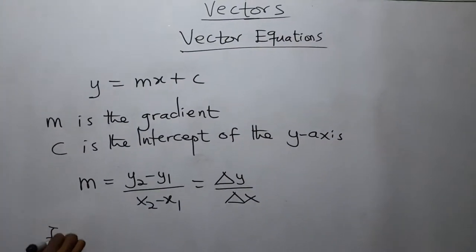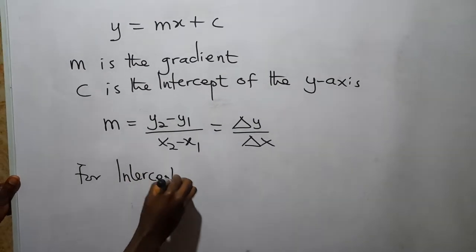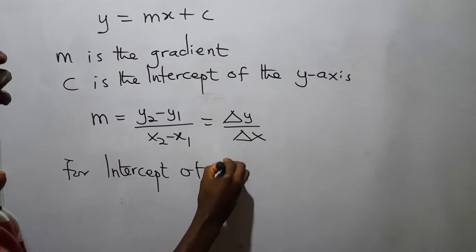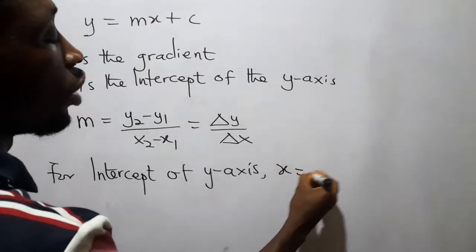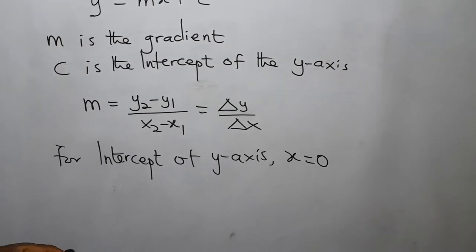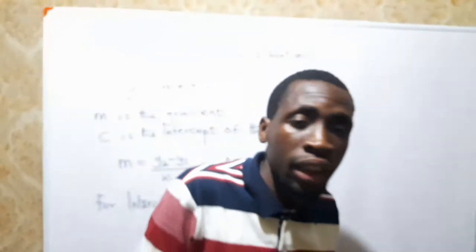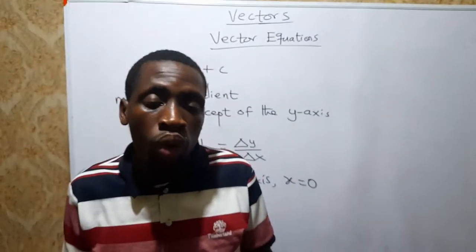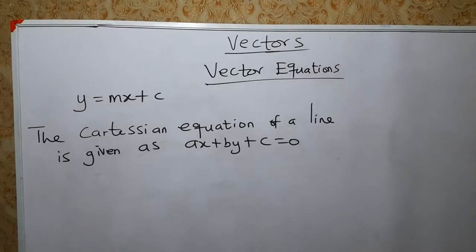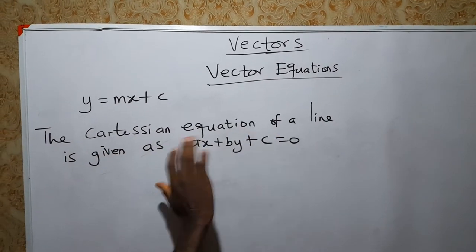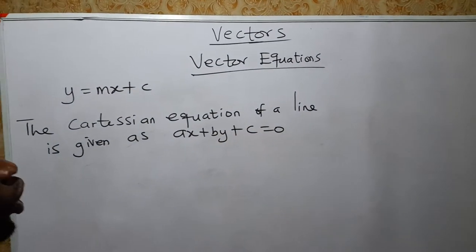For the intercept of the y-axis, x is equal to 0. In the general form of the Cartesian equation of a line, we don't have a problem. The general form of the Cartesian equation of a line is given as ax + by + c = 0.